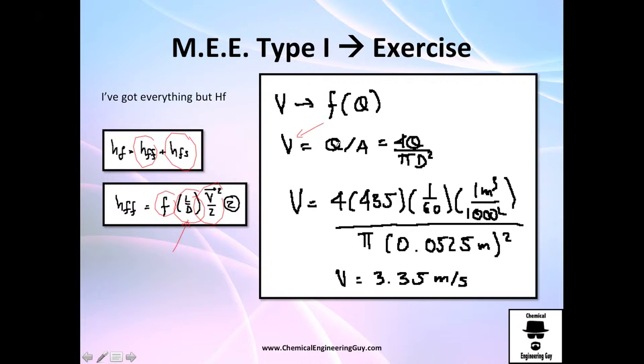I need to find out the velocity. I do it from this equation, Q divided by A. I just substitute data, the volumetric flow rate, change it to seconds from minutes and cubic meters from liters, so I have international units, and I got 3.35 meters per second is the velocity.